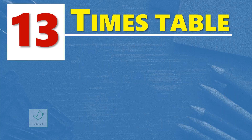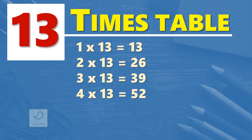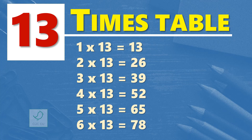13 times table. 1 times 13 is 13. 2 times 13 are 26. 3 times 13 are 39. 4 times 13 are 52. 5 times 13 are 65. 6 times 13 are 78.